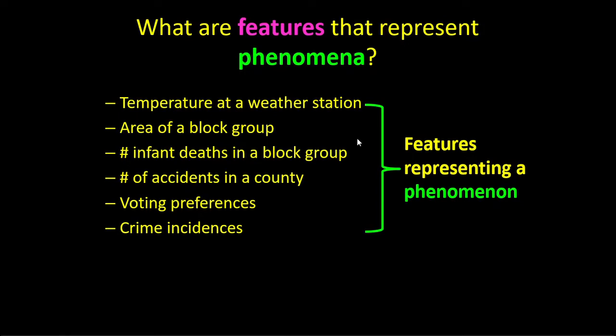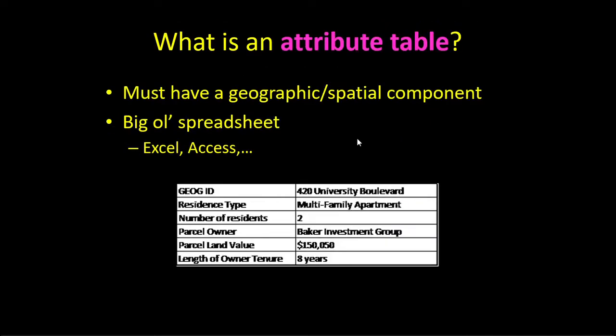Another important concept is the attribute table in geography. For those who haven't taken a GIS class, this is how geographers think. We view the world as an attribute table — essentially a big spreadsheet. But it must have a geographic or spatial component. Spatial and geographic are interchangeable terms.